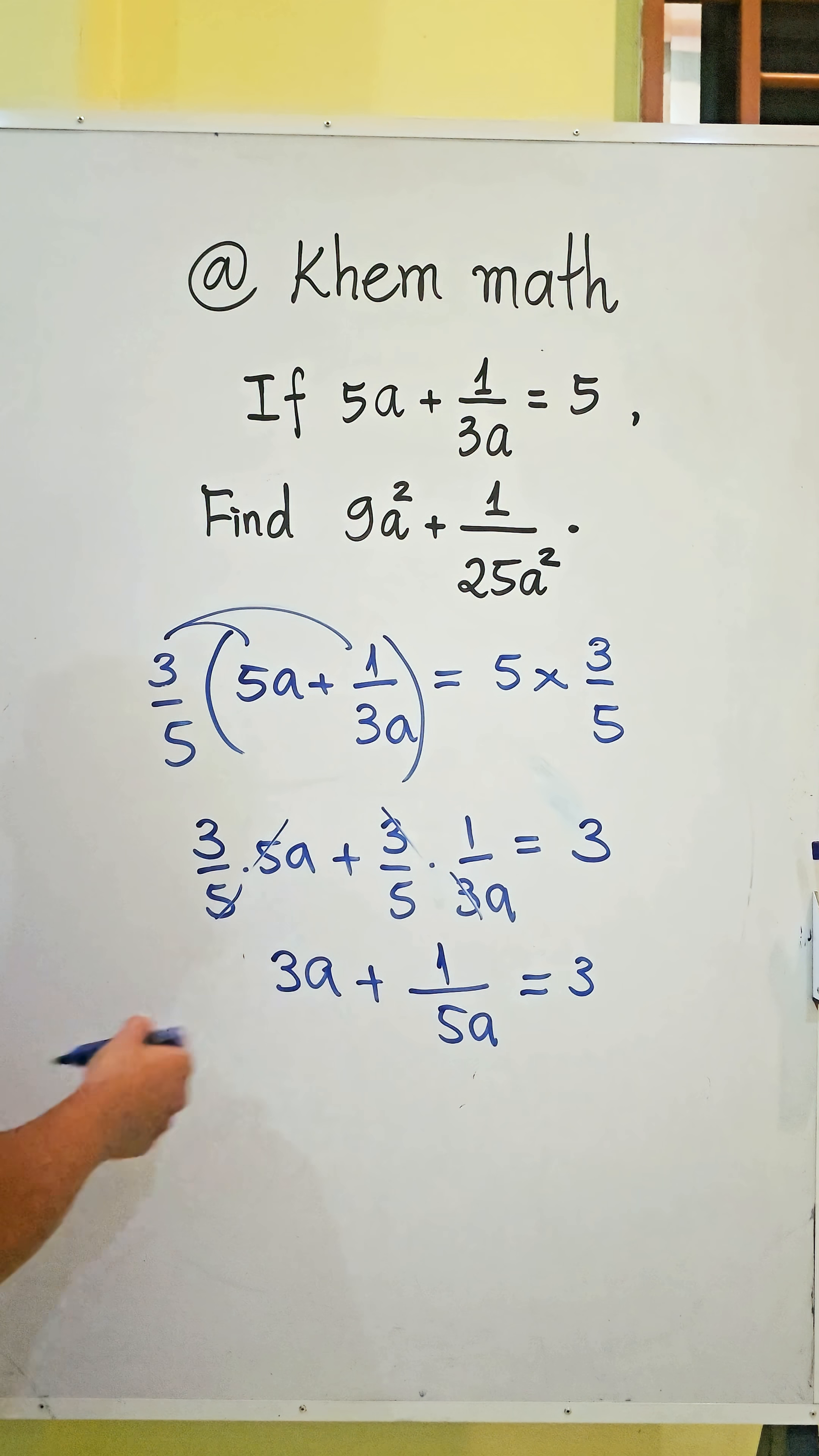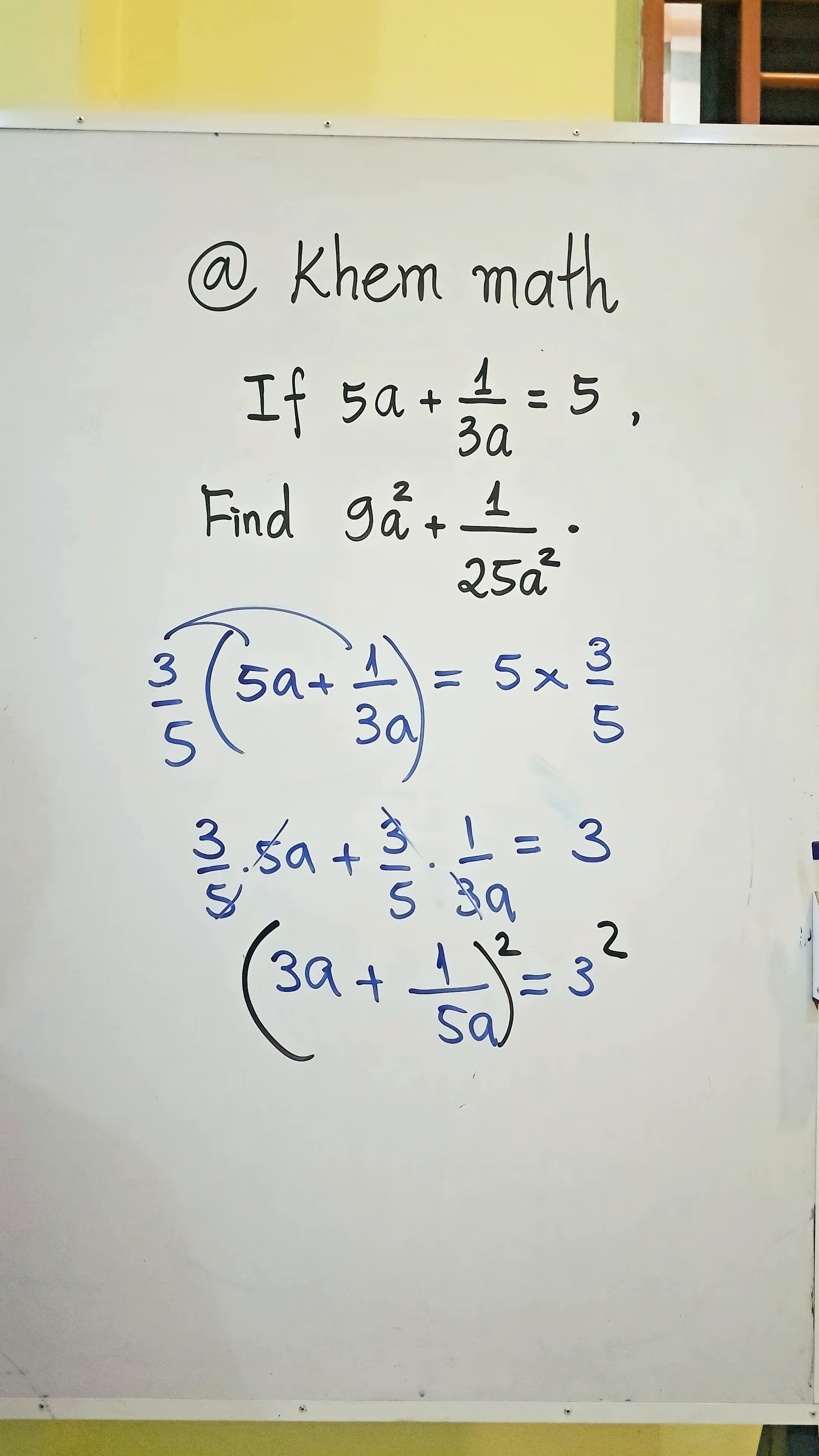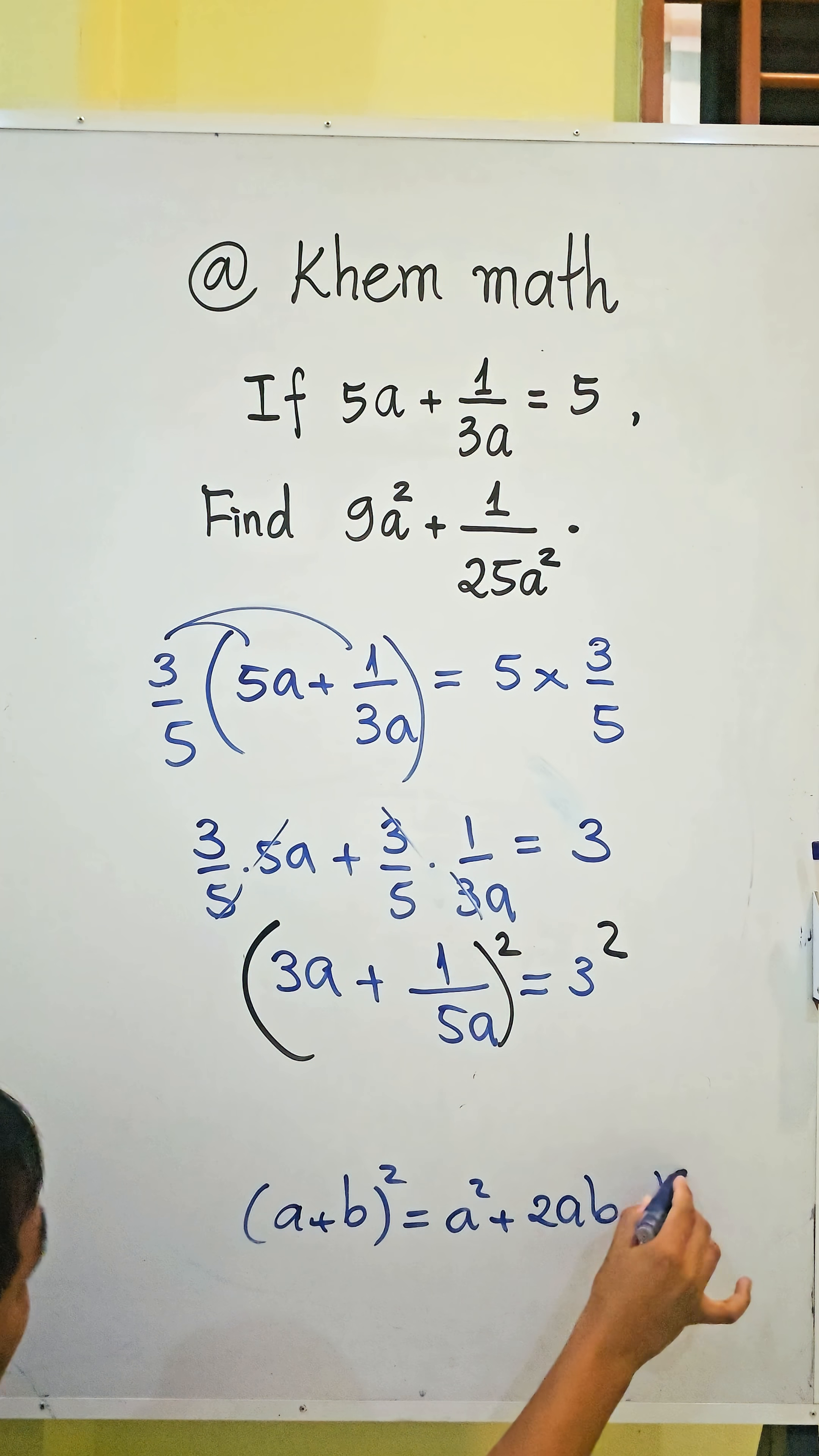And then now we raise both sides of this equation to the square. We raise the square on both sides. And here we use the formula a plus b all square equals a squared plus 2ab plus b squared.